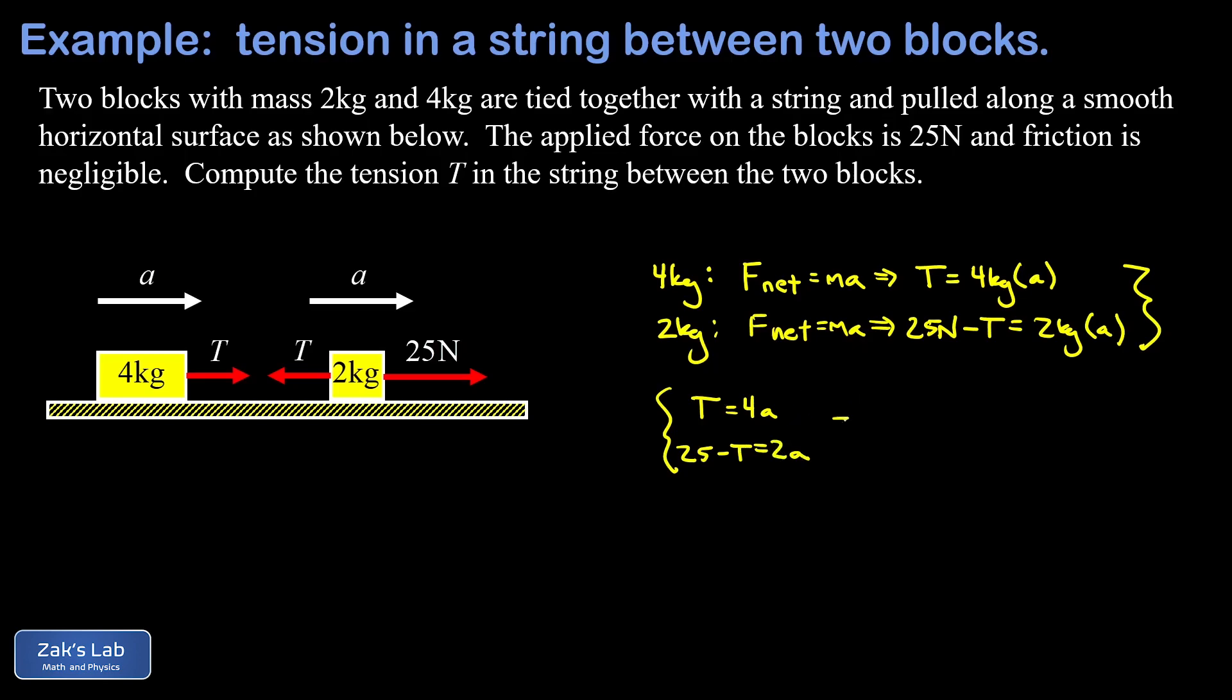All I do here is add the two equations together. And when I do that on the left hand side, I have a T and a negative T. So those are eliminated. All that's left on the left hand side is my 25. And on the right hand side, 4a plus 2a is 6a.